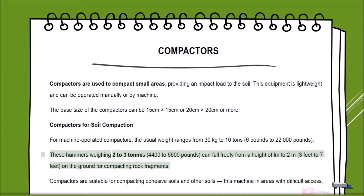These hammers, weighing 2 to 3 tons (4,400 to 6,600 pounds), can fall freely from a height of 1 m to 2 m (3 to 7 feet) on the ground for compacting rock fragments. Compactors are suitable for compacting cohesive soils and other soils, and can be used in areas with difficult access.